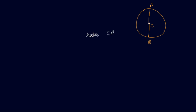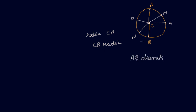This is a circle with center C. CA is the radius, CB is the radius. From the center, any line drawn to the circle is the radius. When we draw a line from the center that touches the circle at any point, those are the radii. When you join two radii together, A and B, it forms a diameter. NM is a diameter because it joins two radii. Similarly, QL is a diameter — CQ is a radius and CL is also a radius. Two radii together — double the radius — is a diameter.